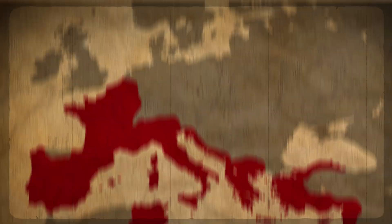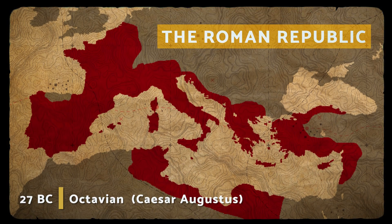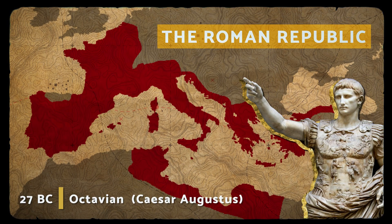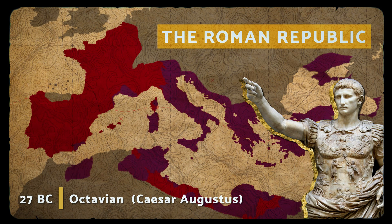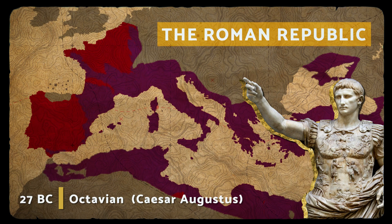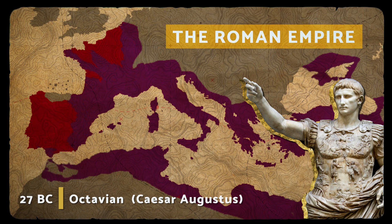And yet, despite all of these checks and balances, in 27 BC, Julius Caesar's nephew Octavian seized power, took the title Caesar Augustus, and the Roman Republic gave way to the Roman Empire. But with all of these safeguards, how could this possibly happen?